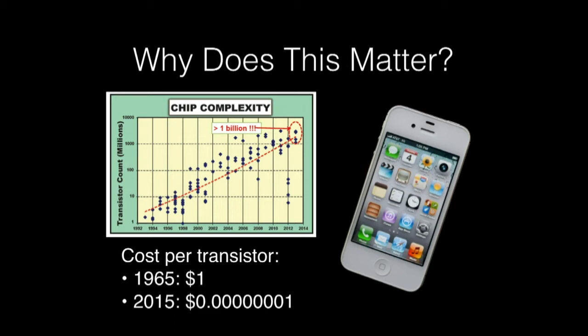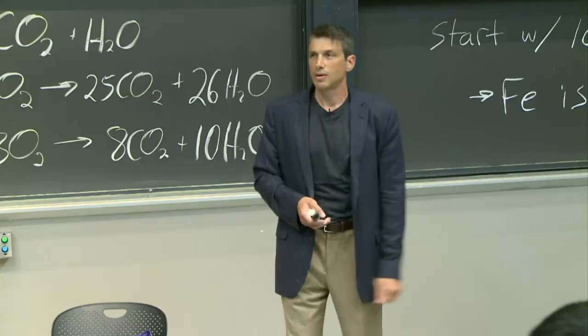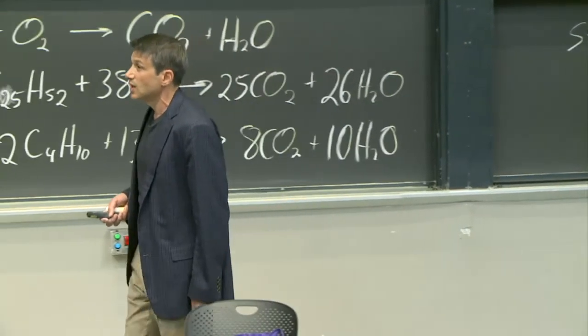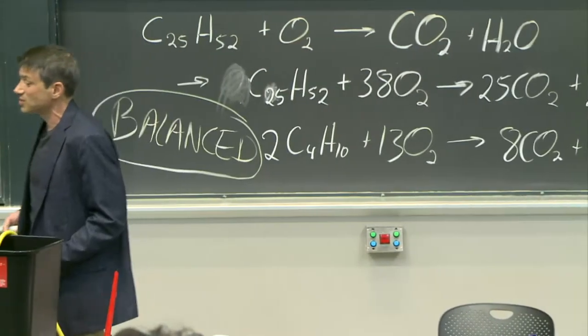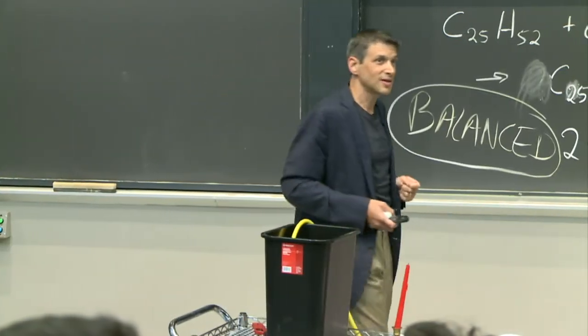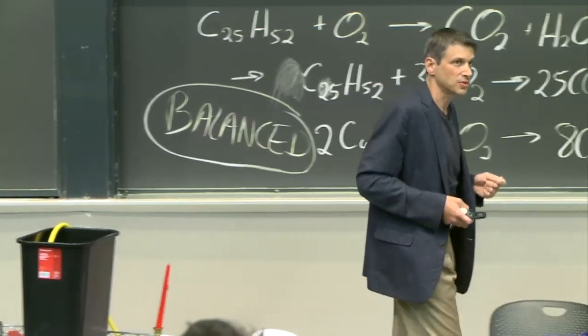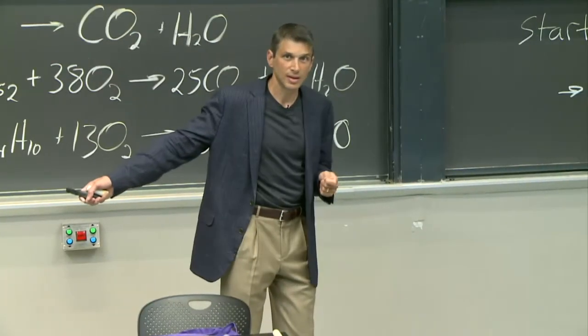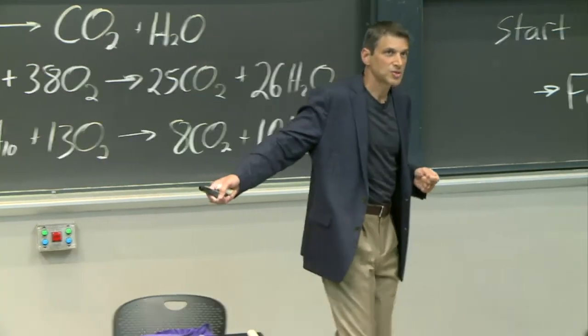In 2012, it became cheaper to print a transistor on a chip than a character in a newspaper. That's a revolution. But that revolution, it started as a processing revolution with one really important element, silicon, and now it's a materials revolution with 63. It's a chemistry revolution.